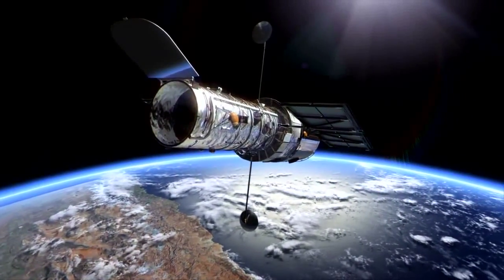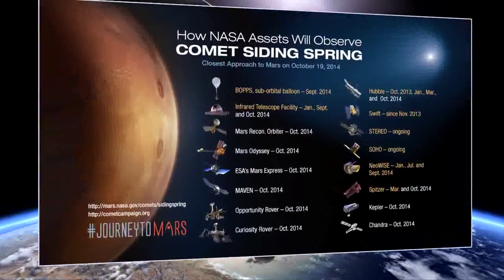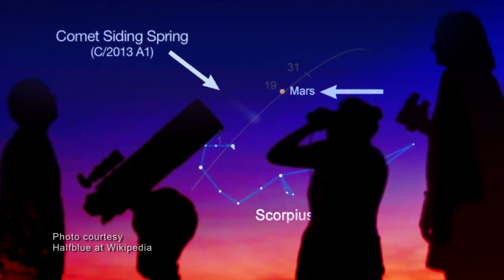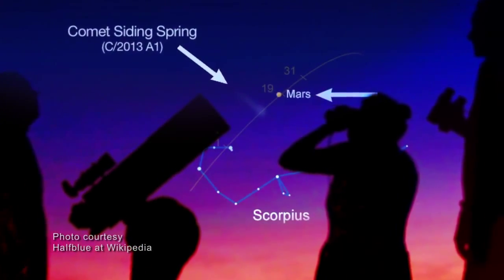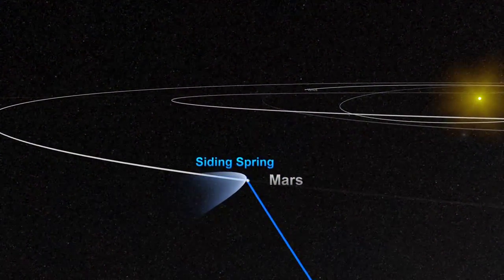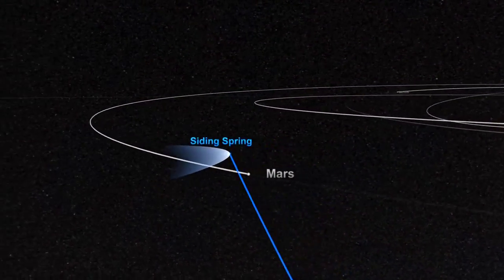One planet over, the Hubble Space Telescope and other space and ground-based observatories will also be keeping an eye on Comet Siding Spring, as will legions of amateur astronomers armed with backyard telescopes, all excited to witness this historic close encounter between Mars and its icy visitor.